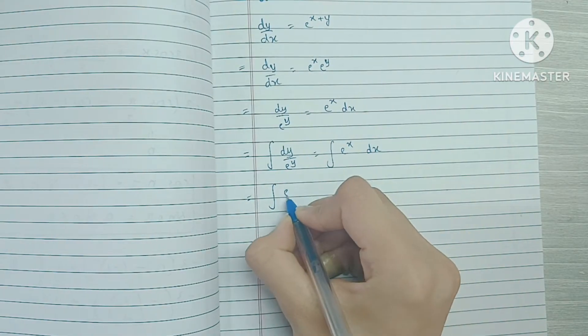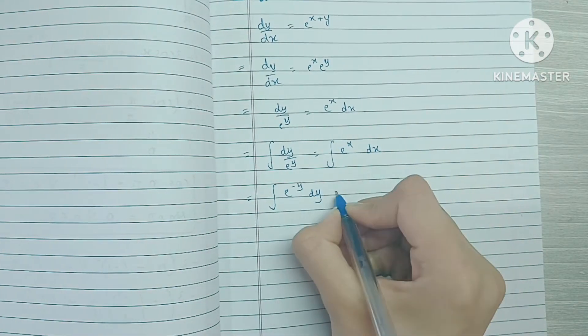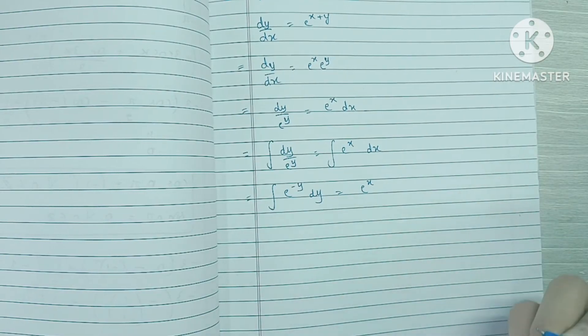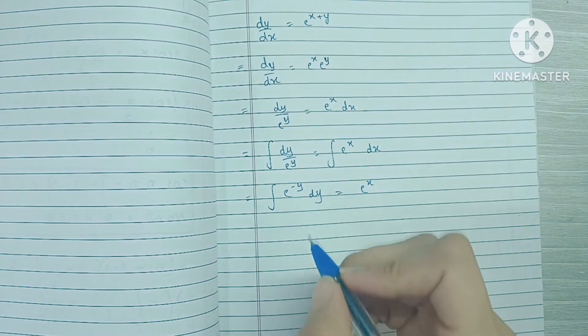This side we can write this as e raised to minus y dy. This becomes e raised to x. We can add a constant over here or on this side. It doesn't matter because it's an arbitrary constant. So I'm going to add it on this side.